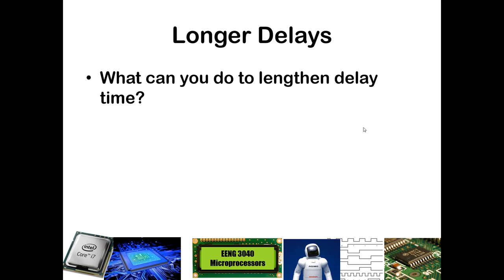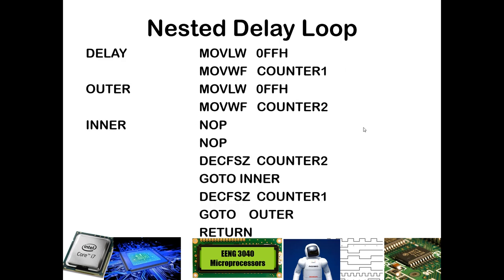So what can we do to lengthen the delay time? We could add some NOPs, and we can also add some nested loops — calling an interior loop within the exterior loop. Here's an example of a nested loop delay. Let's trace through what we understand is going to happen, and then get into the specifics of the timing.